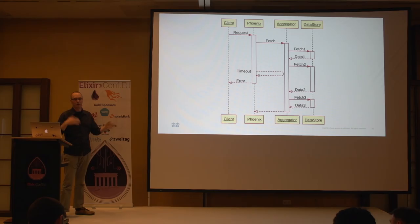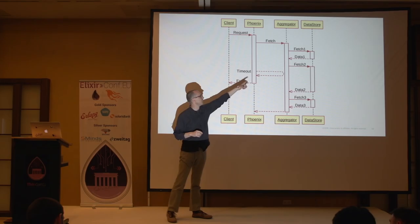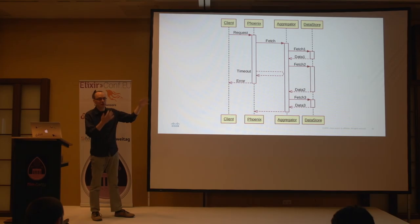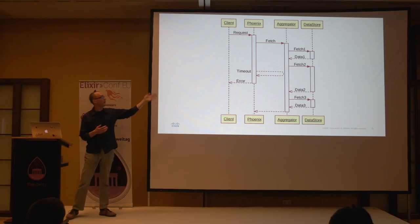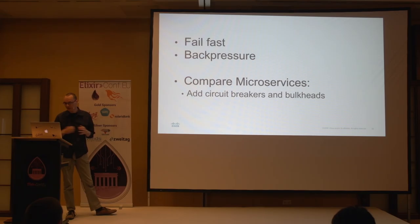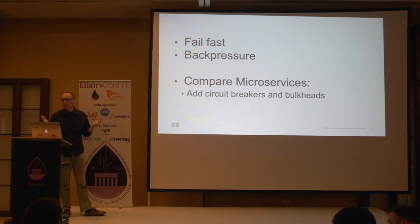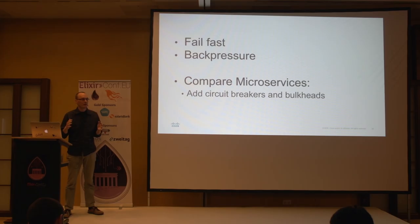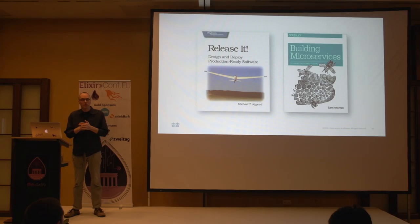One way to handle this is to set different timeouts at each level — a very short timeout for the first fetch, a slightly longer one for fetch two, and so on. The sum of the inner timeouts needs to be less than the timeout of Phoenix toward the aggregator. This is the fail-fast paradigm — back pressure. Jose mentioned in the keynote that the dynamic supervisor will provide some back pressure for spawning children. These are techniques from microservices literature: look at circuit breakers and bulkheads — documented in books on this subject — and see how you apply them within the actor model inside your VM.